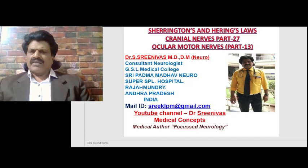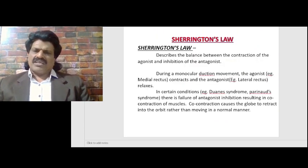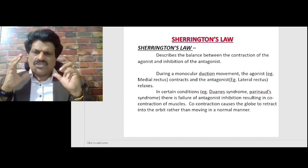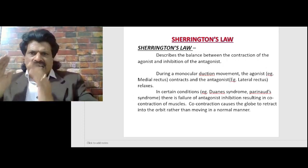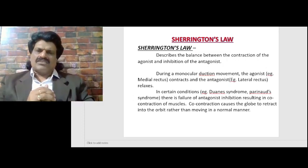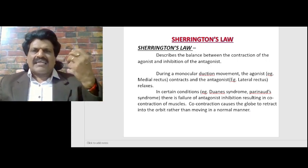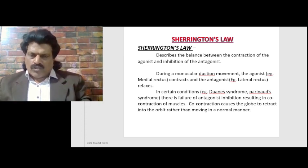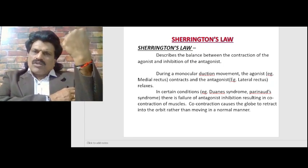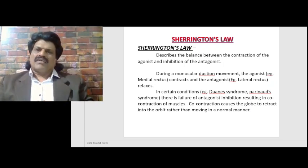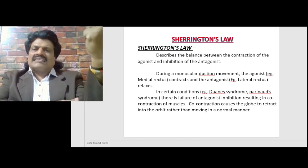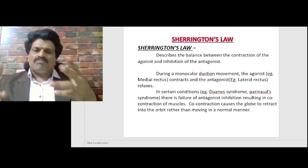These two laws are very interesting and very important, especially to understand eye movements. What is Sherrington's Law? Sherrington's Law describes the balance between the contraction of the agonist and inhibition of the antagonist. So when the agonist contracts, the antagonist has to relax. For example, when I need to lift the dumbbells, my biceps will contract but my triceps will relax. If both contract together, I cannot lift the dumbbells. This is known as Sherrington's Law of Reciprocal Innervation.